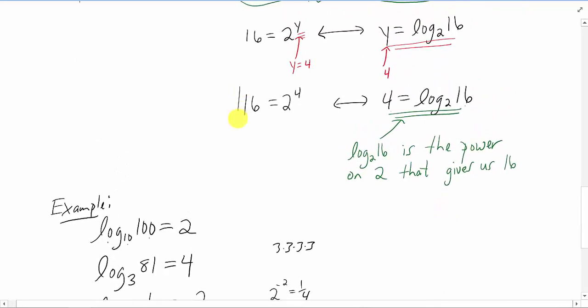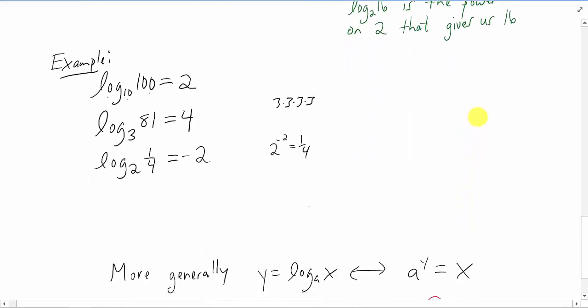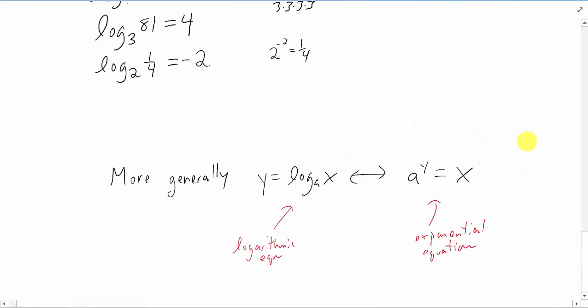Okay, remember up here when we were writing equations in two different forms? This looked like an exponential equation, and this was an equation with the logarithm in it. If we investigate that a little bit more generally, what we get is this. If we have a logarithmic equation, y equals log base a of x, it can be written as an exponential equation as well: a to the y equals x. And we can take any exponential equation and write it as a logarithmic equation just by moving the letters around.